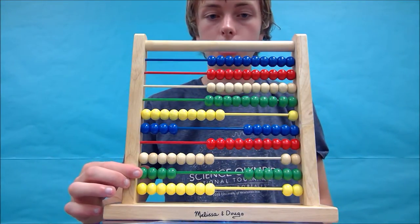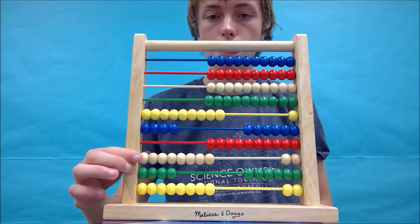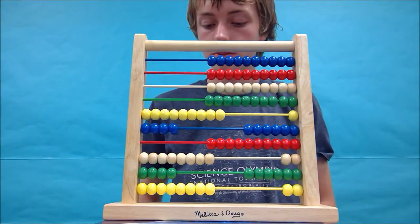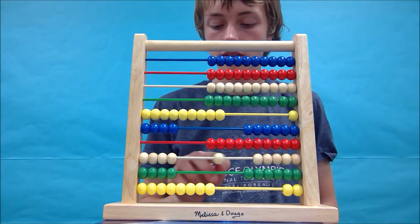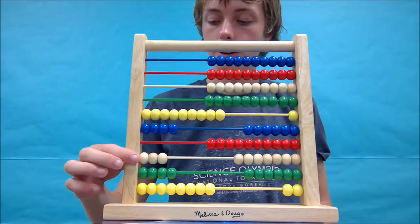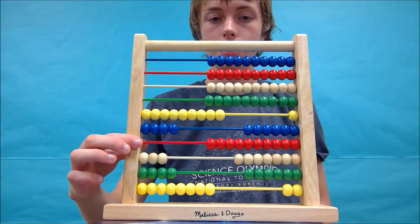Now we have the tens row complete. We need to do the hundreds row. The hundreds row, we need to subtract 5 or remove 5 beads. 1, 2, 3, 4, 5. Hundreds row is complete. Now we need to move to the thousands.